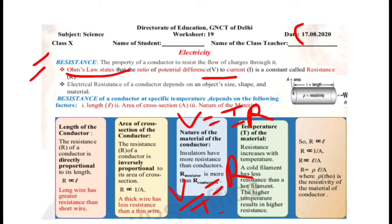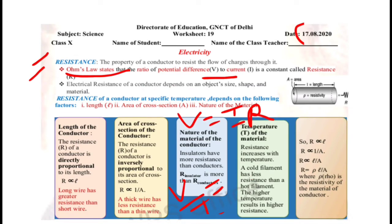The electrical resistance of a conductor depends on the object's size, shape, and the material it is made of — which material you are using for your conductor, what is its length, and other properties.